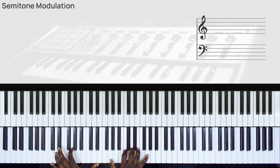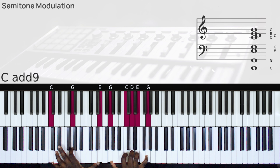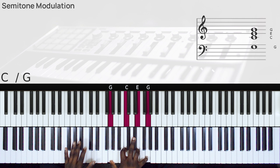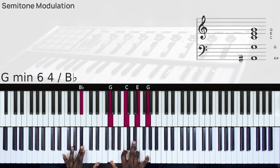Alright, so this is how the modulation works. It's a very simple principle. We are in the key of C. So whenever you want to modulate one semitone higher, all you need to do is to play your one chord, and then couple that with a b7 on your left hand.